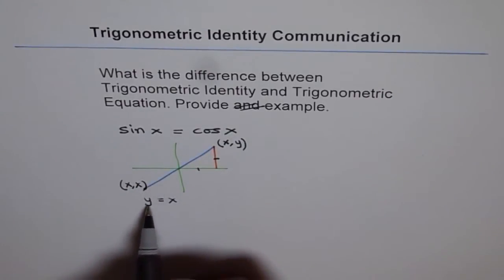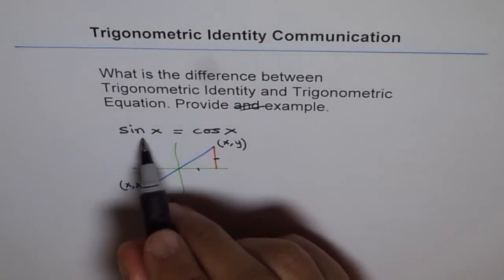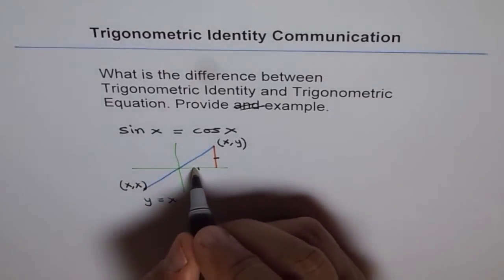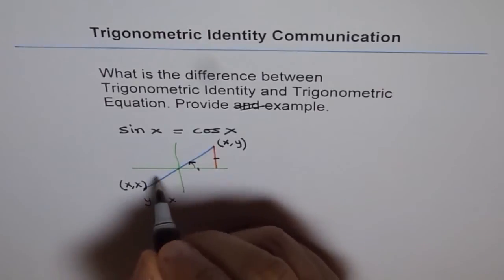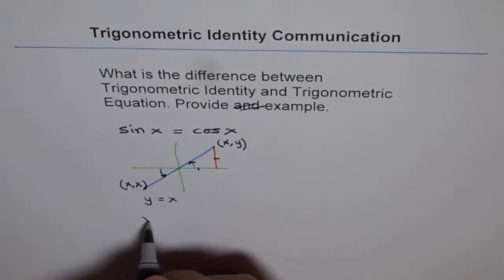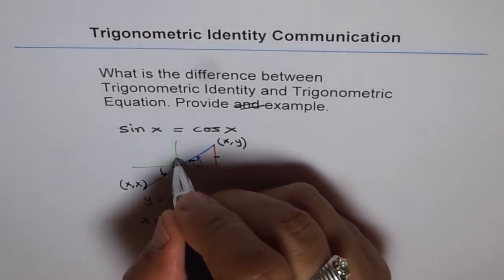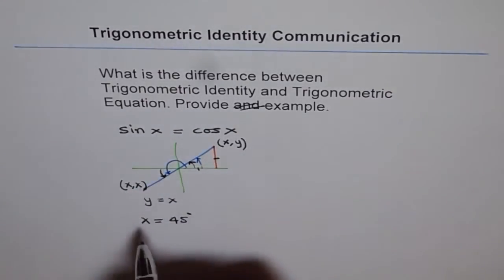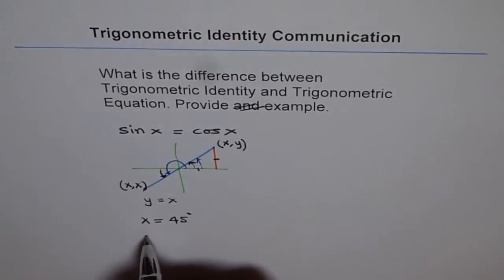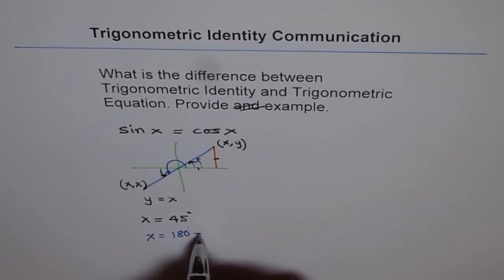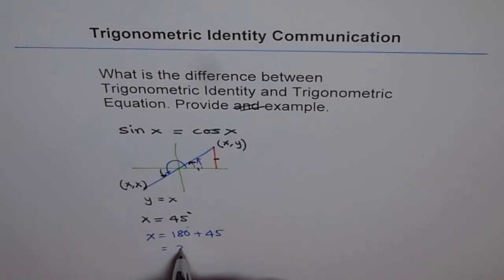So y equals x is a line on which every point gives you sin x equals cos x. As far as the angle x is concerned, that line makes an angle of 45 degrees with the horizontal. So x could equal 45 degrees, which is in quadrant 1, or 180 plus 45 degrees. The two answers for which sin x equals cos x is true are x equals 45 or x equals 225 degrees.